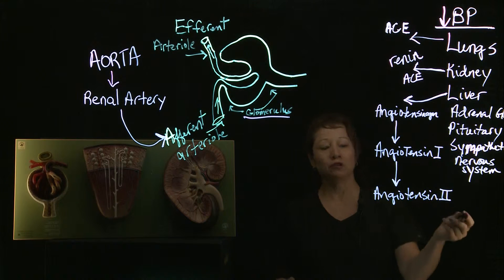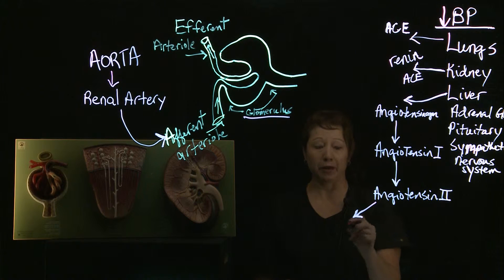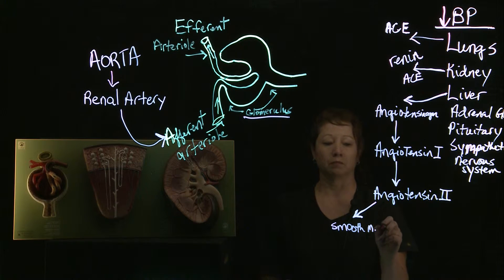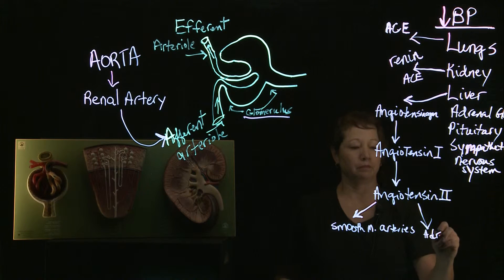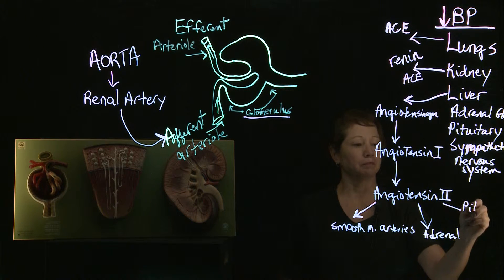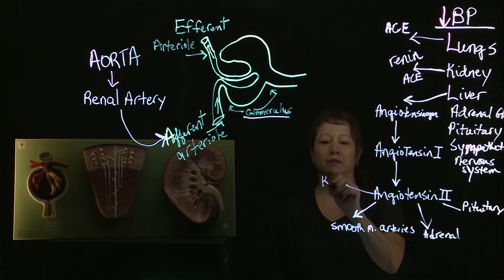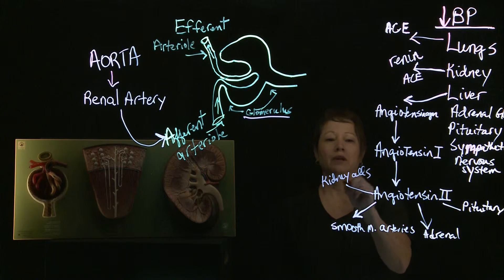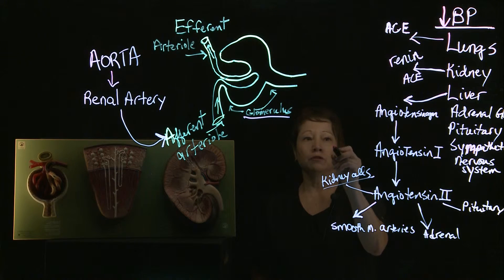Angiotensin II plays a huge role in getting the blood pressure back to normal or elevated. The cells primarily affected are the smooth muscle cells of the arteries. It also stimulates the adrenal gland, the pituitary, and in the kidney it helps the proximal tubules to regulate sodium.